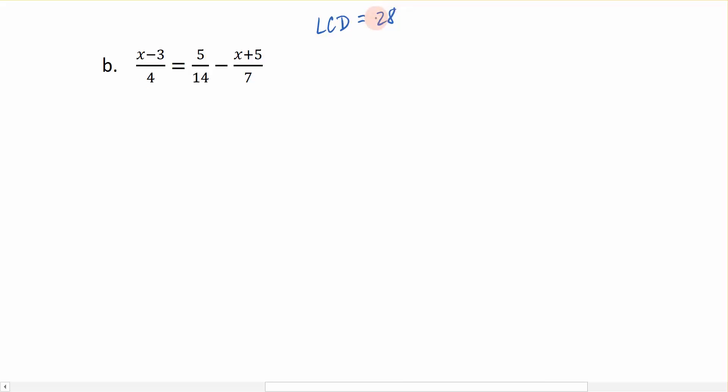28 is a number that 4, 14, and 7 all divide into, and that's the number that I'm going to multiply through to get rid of my fractions. So, I have 1, 2, 3 terms in this equation, and I'm going to multiply all 3 terms by 28 over 1.